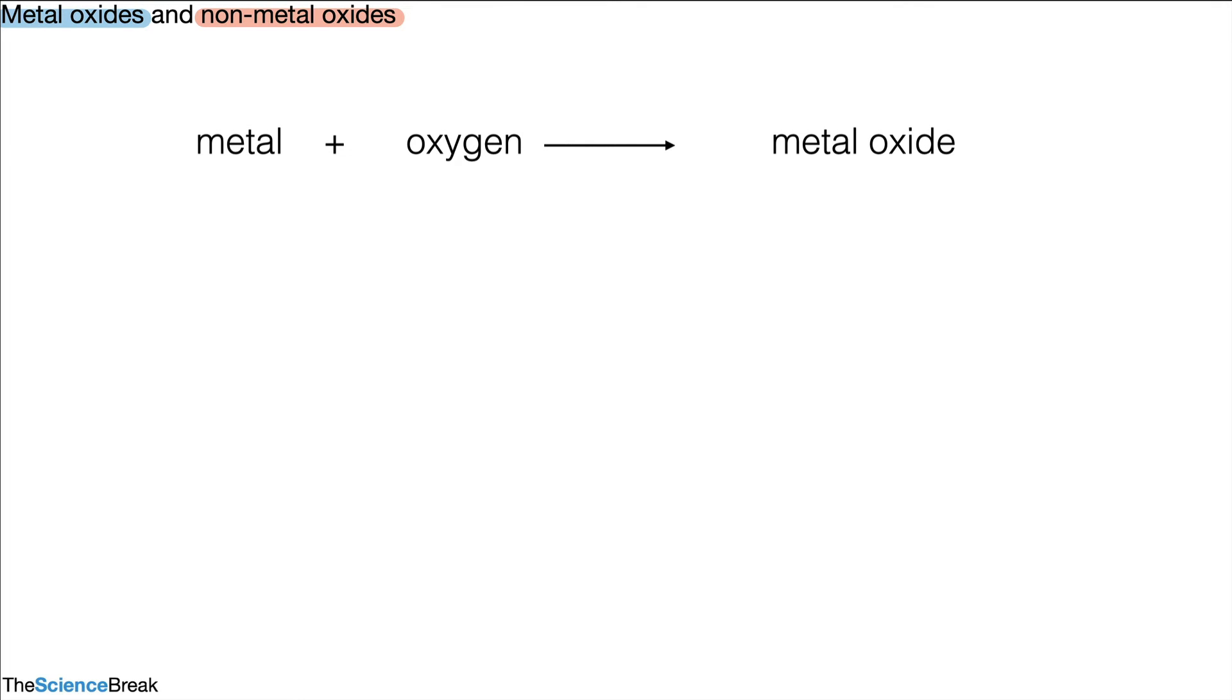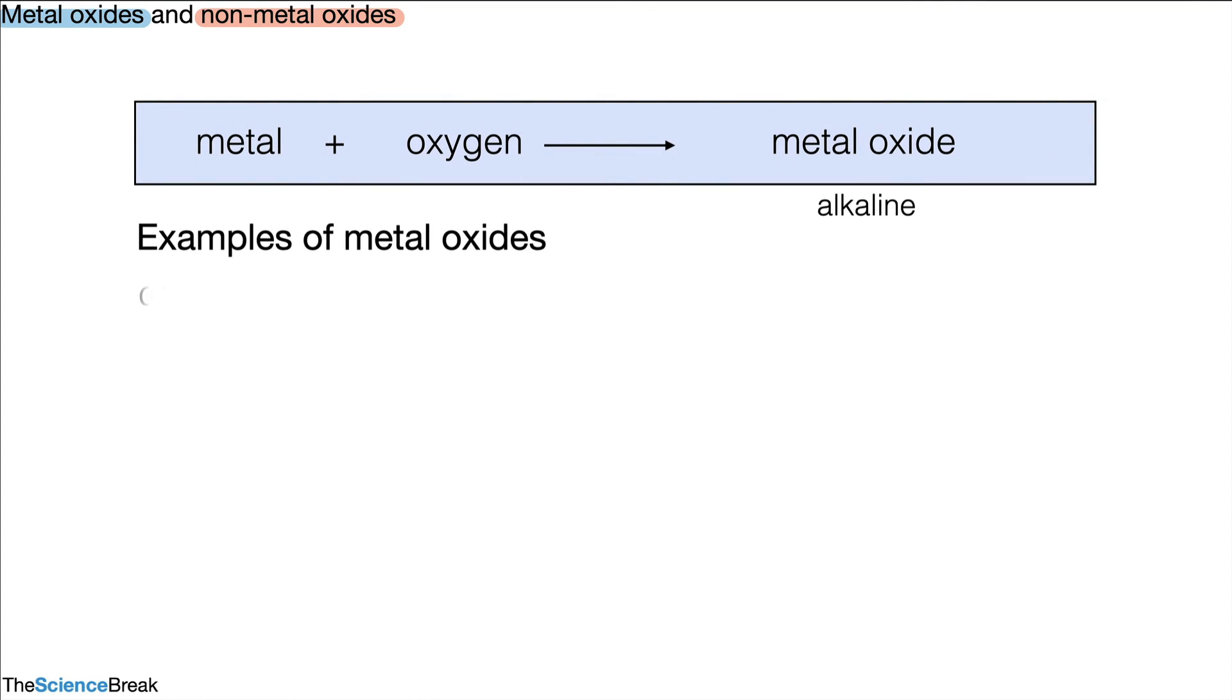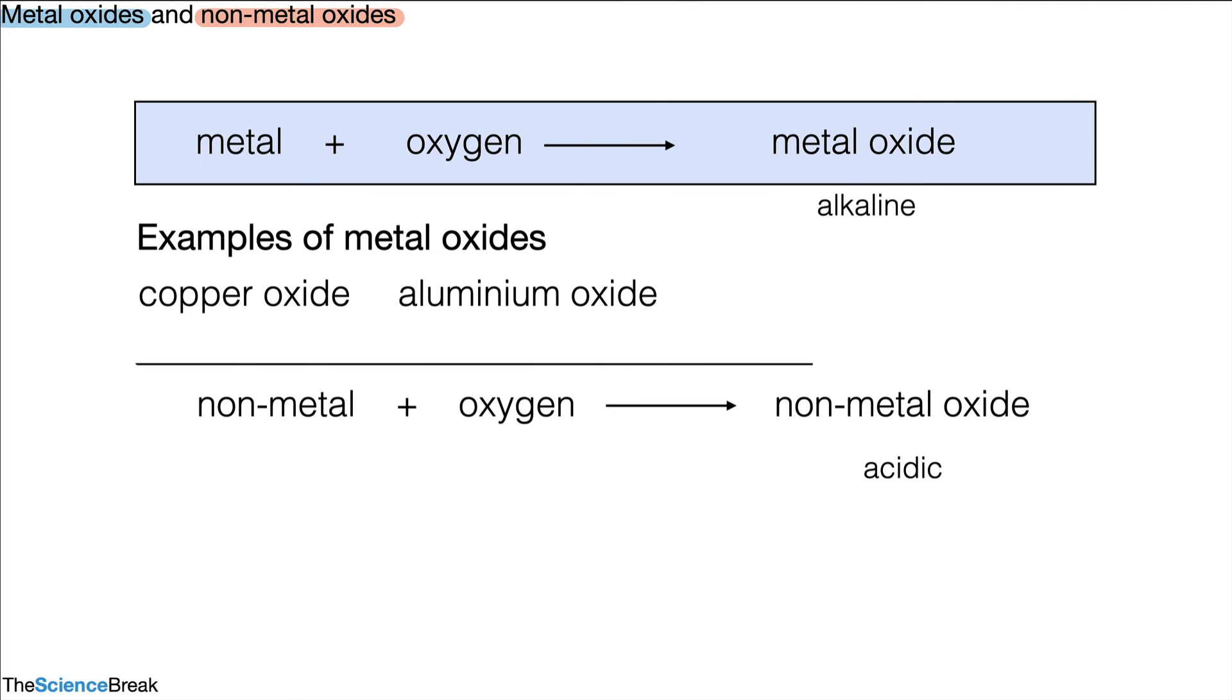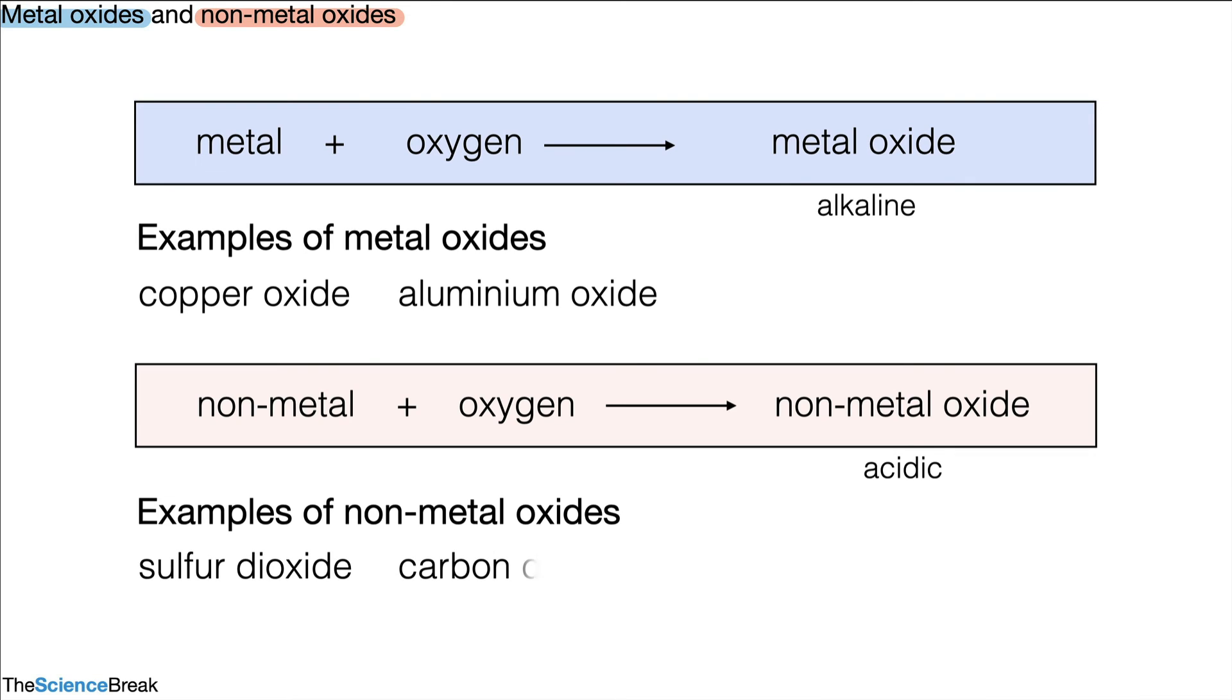So we can summarize the whole thing. Now we've got metal plus oxygen gives us a metal oxide and that is alkaline. The metal oxide is alkaline, and we said there are a couple of examples: copper and aluminium oxide. And then we have non-metal plus oxygen gives us a non-metal oxide and the non-metal oxide is acidic. The examples we gave were sulfur dioxide, carbon dioxide, and nitrogen dioxide.